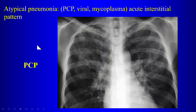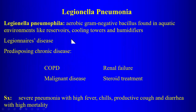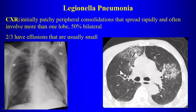Mycoplasma pneumonia is the most common non-bacterial pneumonia; the interstitial pattern is classic for Mycoplasma, although it more likely gives you patchy consolidations. Legionella pneumonia is another unusual pneumonia — there's nothing really specific about the imaging. The bacteria grows where there is water: cooling towers, reservoirs, humidifiers. Predisposing conditions include COPD, malignancy, renal failure, and steroids.